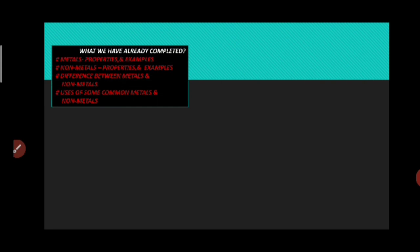Before entering into the discussion, let's see what we have already covered from this chapter. We have discussed about metals, its properties and examples, non-metals, its properties and examples, difference between metals and non-metals, and uses of some common metals and non-metals. Those who have not seen my previous videos can watch it to understand these topics clearly.